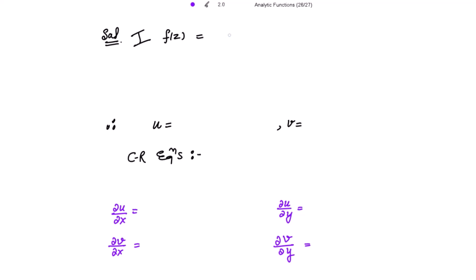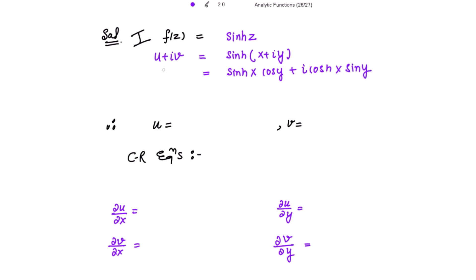The function given to us is sine hyperbolic z, and f(z) can be written as u plus iota v, which equals sine hyperbolic of (x + iota y). Opening this using the formula, when we compare the real and imaginary parts, we get u equal to sinh(x)cos(y) and v equal to cosh(x)sin(y).